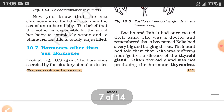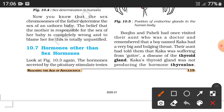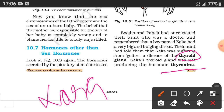You must know this diagram of endocrine gland positions, as labeling questions can come in the exam. Bujo and Paheli once visited their aunt who was a doctor. They remembered a boy named Kaka who had a very big and bulging throat. Kaka's thyroid gland was not producing the hormone thyroxine. The thyroid gland is the largest endocrine gland in our body.